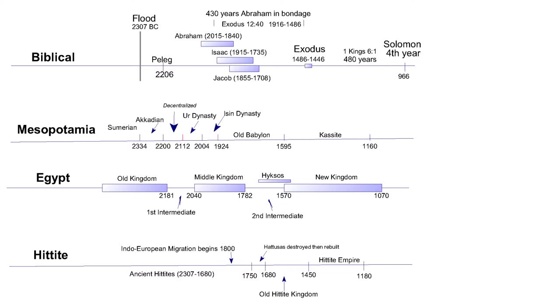For Egypt, this was a time of the 11th dynasty emerging from the first intermediate period, 70 years later than lower Mesopotamia recovered from the fall of the Akkadian dynasty.